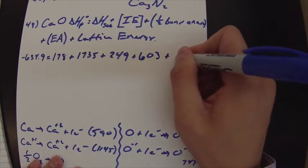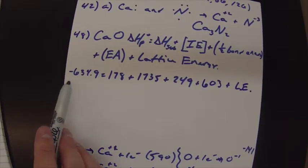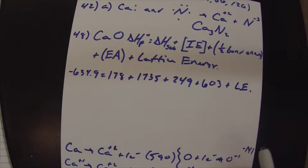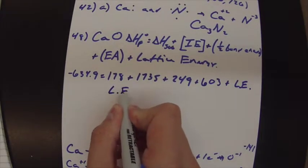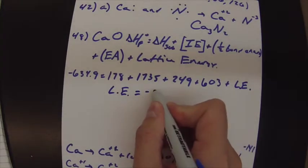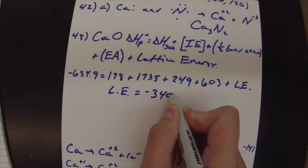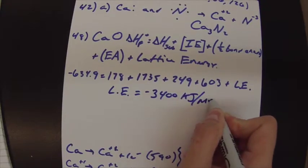And then last is just our lattice energy. So really simply, you have a super simple arithmetic problem there. You just solve for lattice energy. And your lattice energy should be negative 3,400 kilojoules per mole.